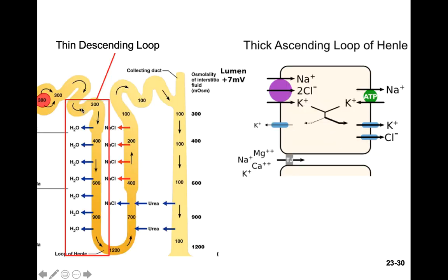Look at the concentration of the tubular fluid — it starts at 300 osmos. As you move down the loop, the only thing you're losing from tubular fluid is water. The more water you lose, the more salt stays behind, and the higher the concentration becomes. Once you curve and move back up the loop of Henle, the concentration decreases because the only thing you're reabsorbing now is salts.